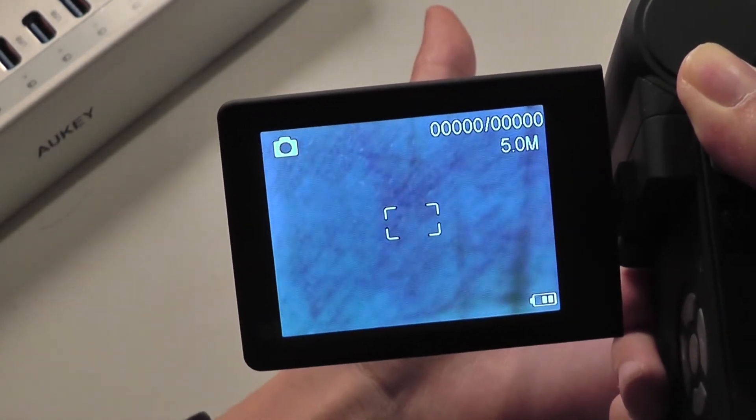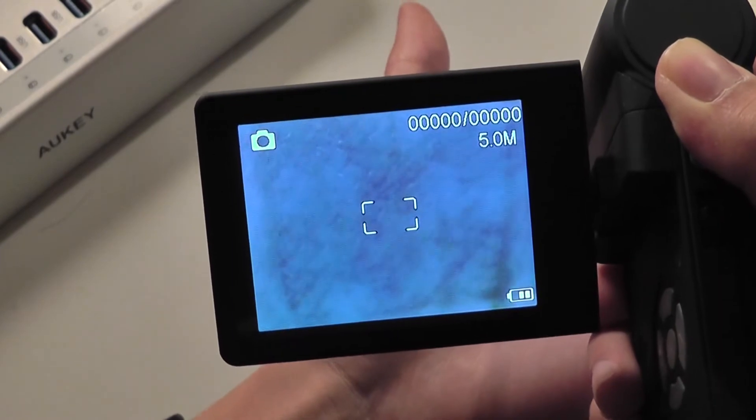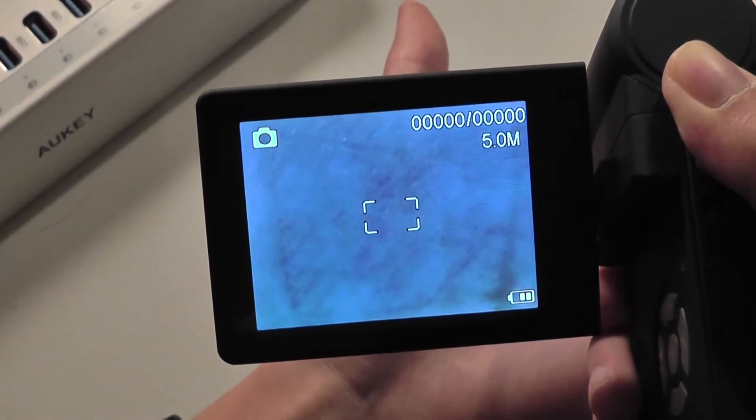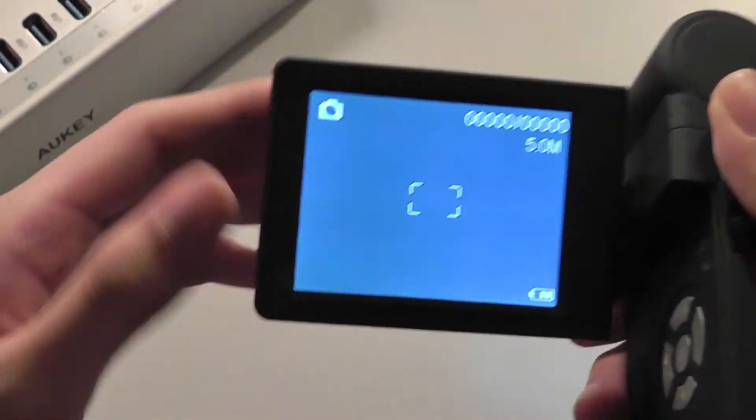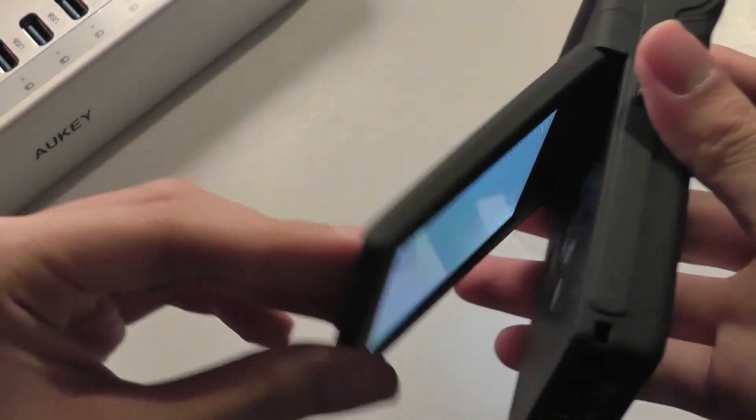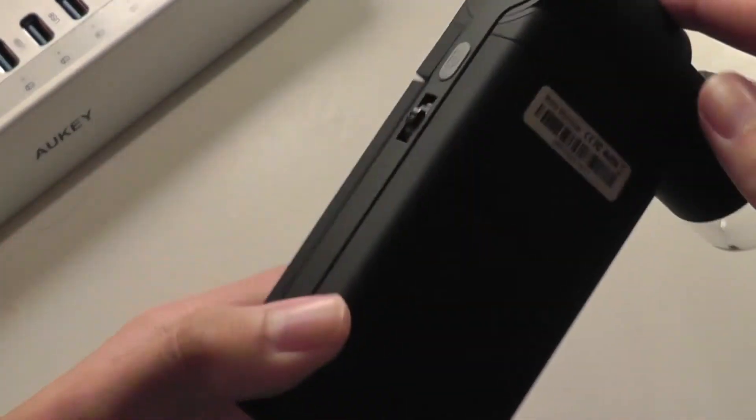You can get things to be a pretty crisp resolution. You can change it. This is five megapixels right now. You can get it even higher if you want to, up to 12 megapixels, which is very impressive. I can take an image of that and then take it out. After when I'm done, I can simply put it back in and the device will automatically turn off.